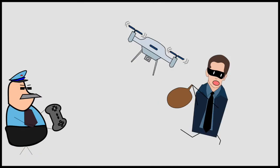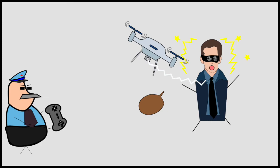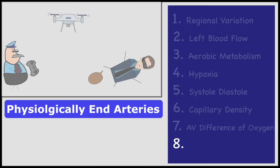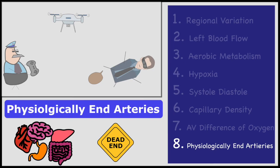The security uses the drone to taser the thief, stopping him from escaping. This is the end for the thief. This brings us to physiologically end arteries. Coronary arteries are physiologically end arteries. They do not show functional anastomosis.